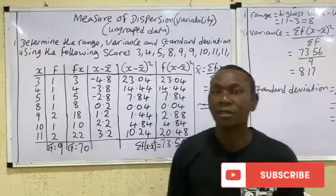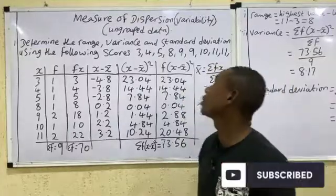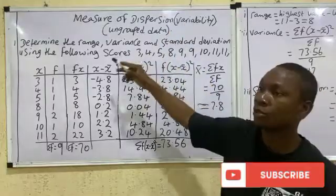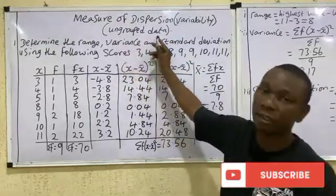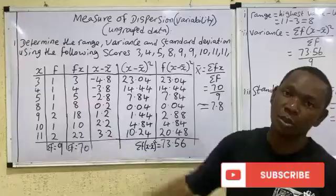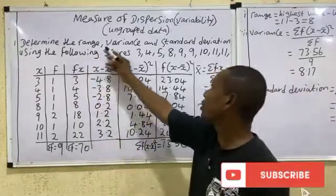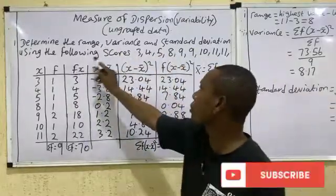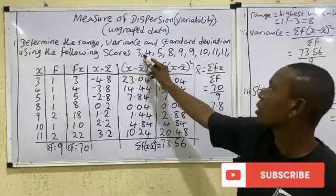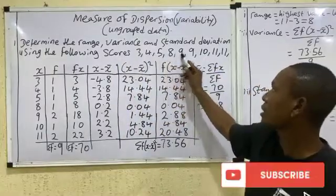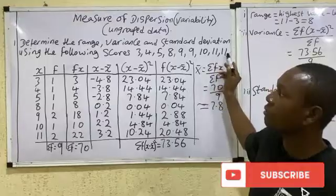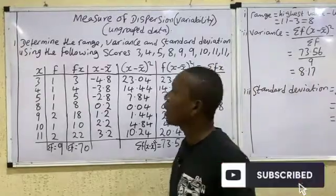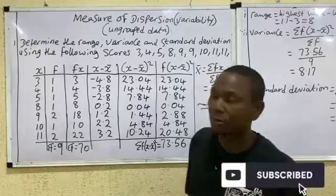Welcome to Science Assets. In today's class we're talking about measures of dispersion or variability, and we'll be dealing with ungrouped data. Let's take this question: determine the range, variance, and standard deviation using the following scores or values: 3, 4, 5, 8, 9, 9, 10, 11, 11.